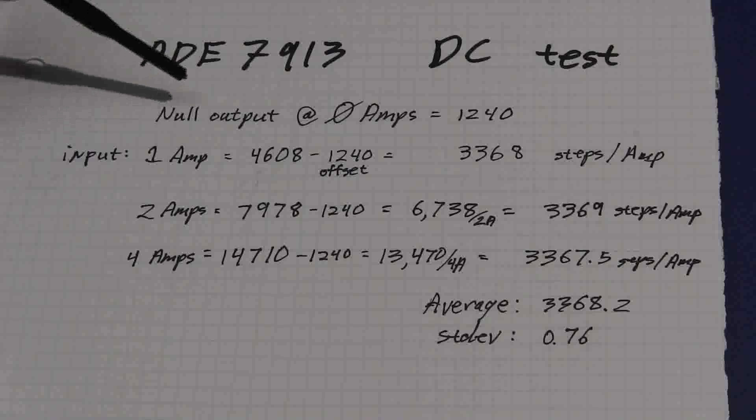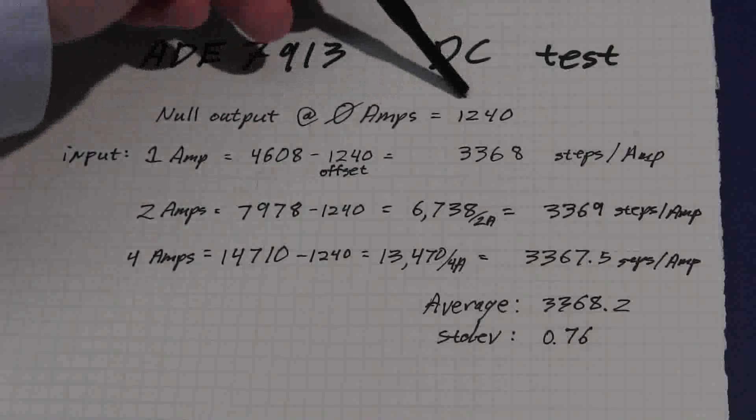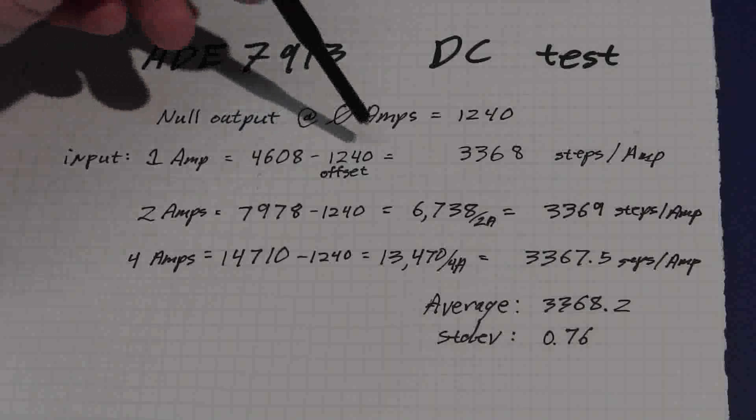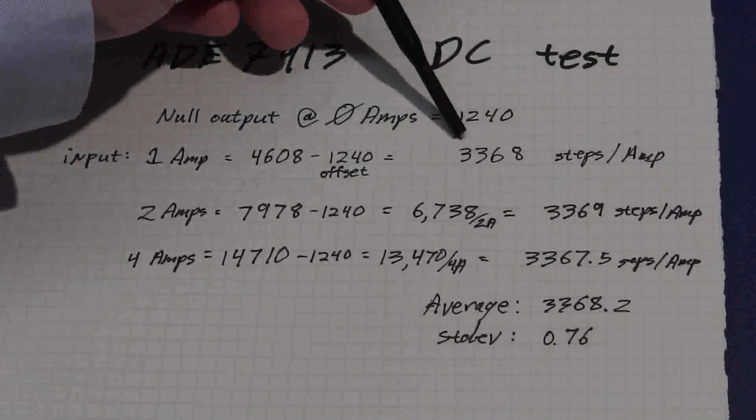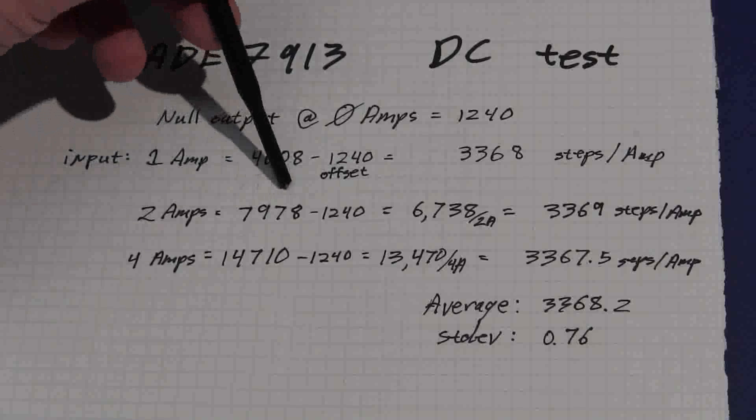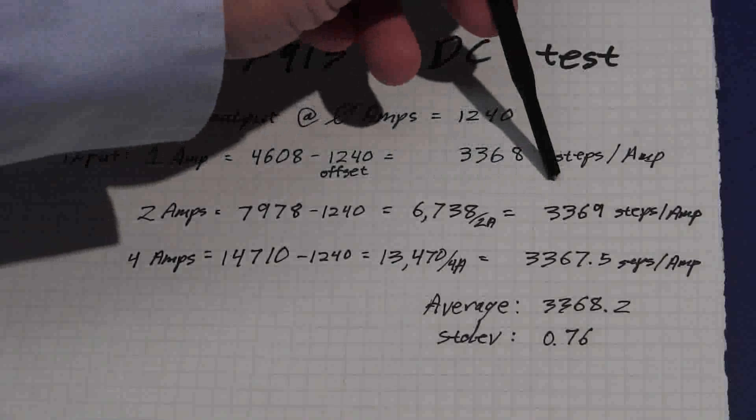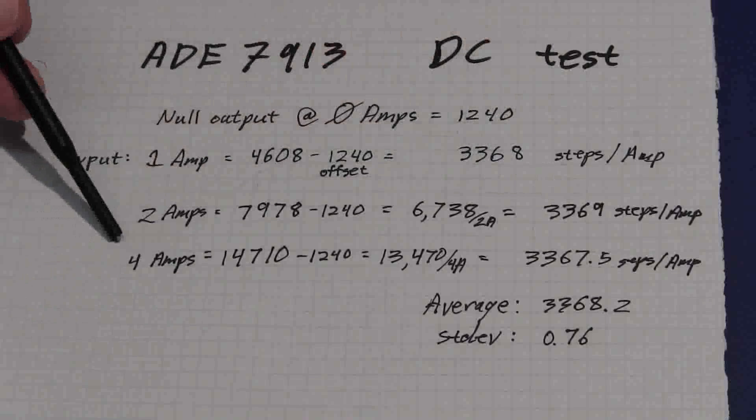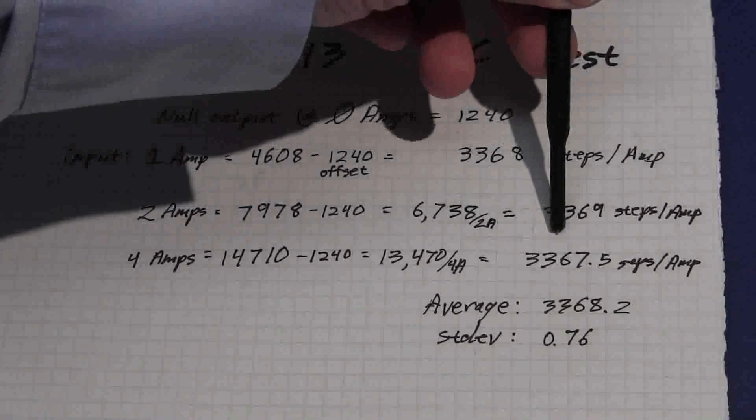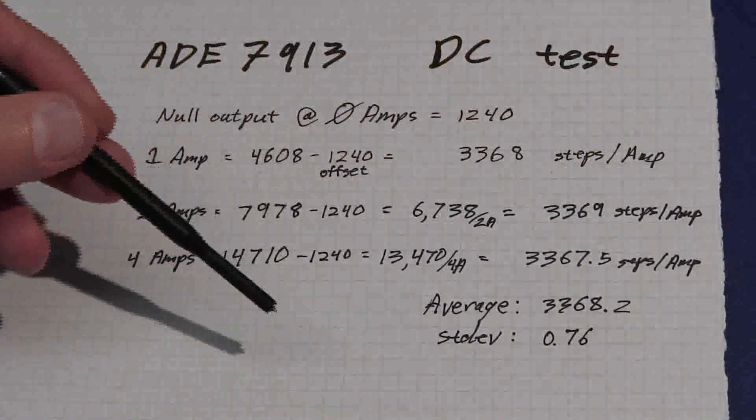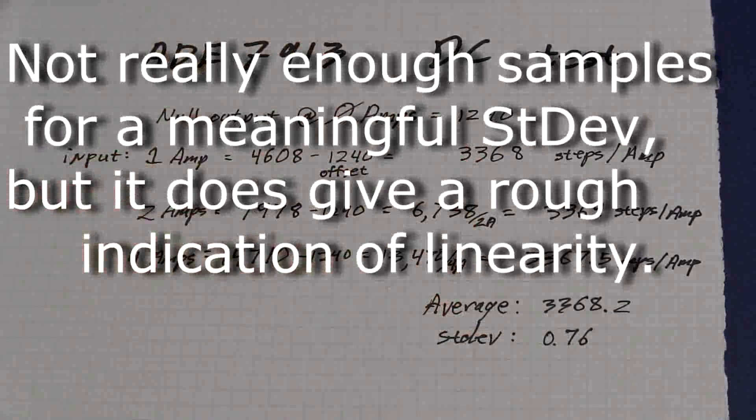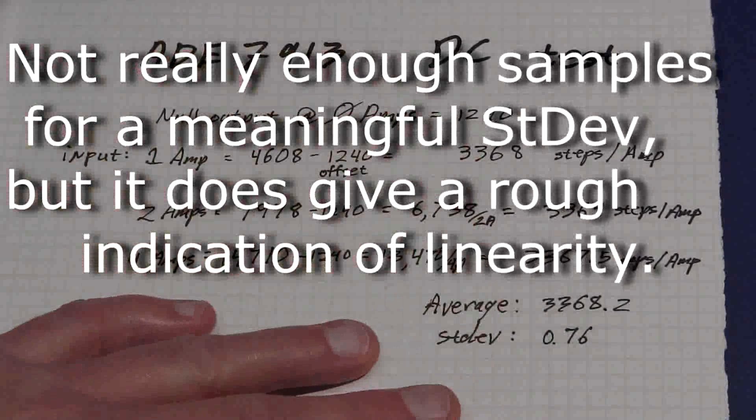So let's run the numbers on the DC test. On the 7913, we had a null output at 0 amps of 1240. And with an input of just 1 amp, we had 4608 minus 1240, giving us 3368 steps per amp. At 2 amps, we had a reading of 7978, giving us 3369 steps per amp. Very close. And 4 amps, we had a reading of 14710, giving us an output of 3367.5 steps per amp. That's great because it gives us an average of 3368.2 and a standard deviation of less than 1, which is very good. So this is very linear on DC readings.